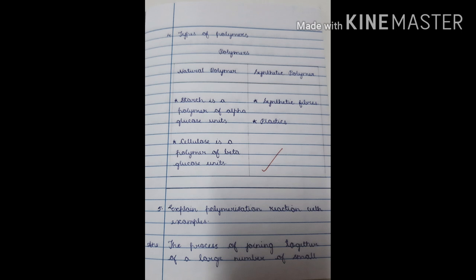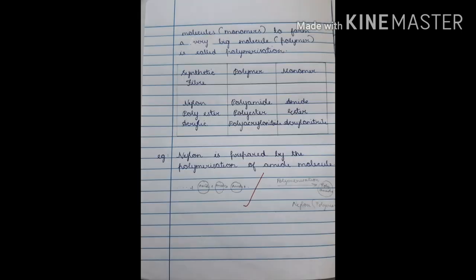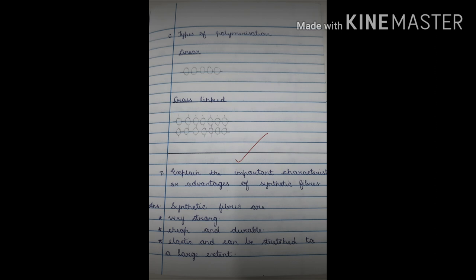Fifth question: explain the polymerization reaction with examples. The process of joining together a large number of small molecules or monomers to form a very big molecule or polymer is called polymerization. Synthetic fiber examples: nylon, polyester, acrylic. Polymer examples: polyamide, polyester, polyacrylonitrile. Monomer examples: amide, ester, acrylonitrile. For example, nylon is prepared by the polymerization of amide molecules.